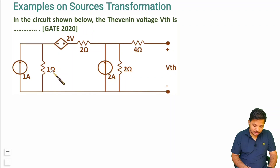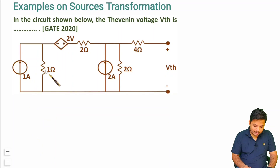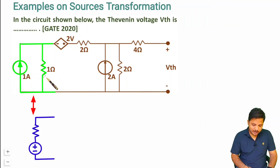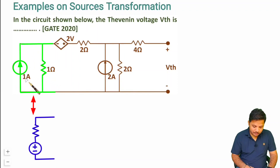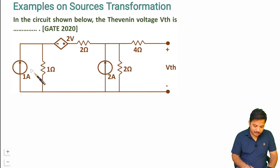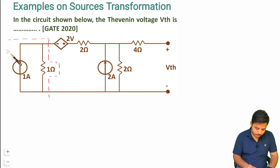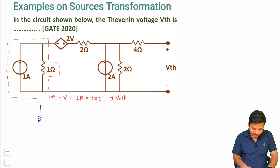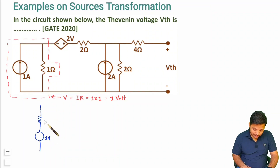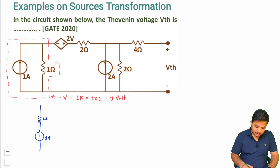To apply source transformation, we have a current source in parallel with a resistor. If you have a current source in parallel with a resistor, then current-to-voltage source transformation can be done by converting it to a voltage source in series with a resistor. The value of the voltage source will be V = IR, so 1 × 1 = 1 volt, in series with a 1 ohm resistor. Since the current direction is upward, the voltage source polarity should be minus-plus.